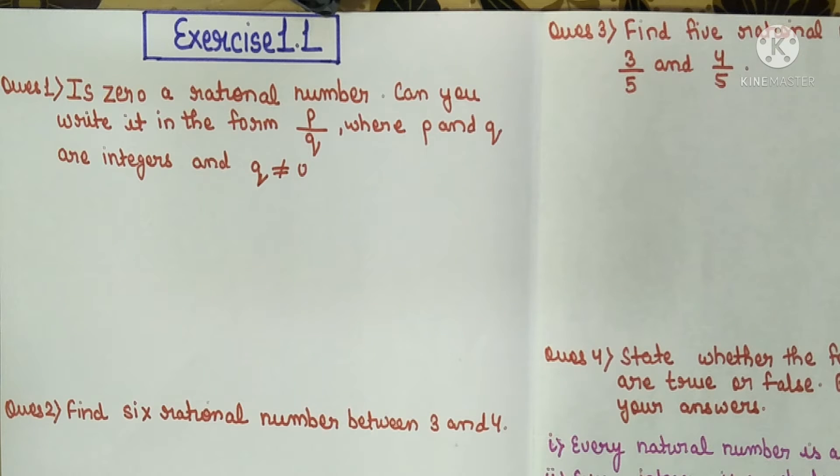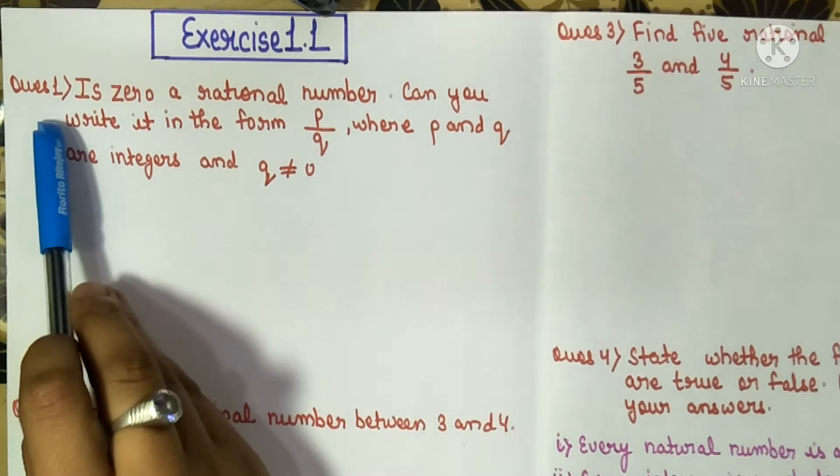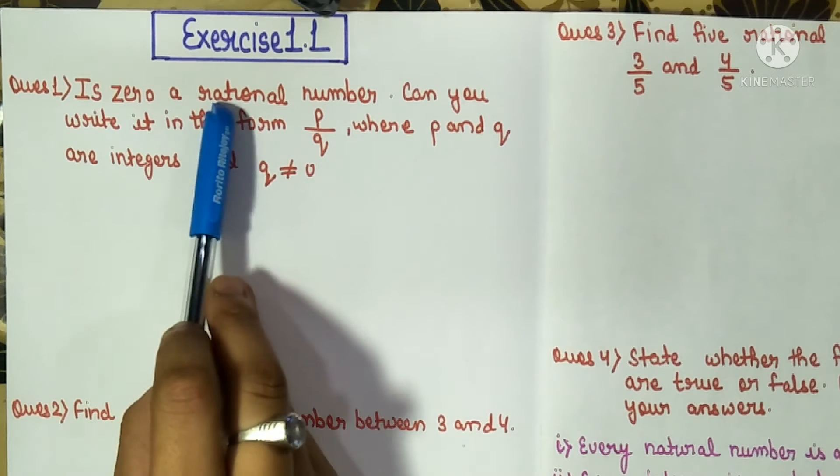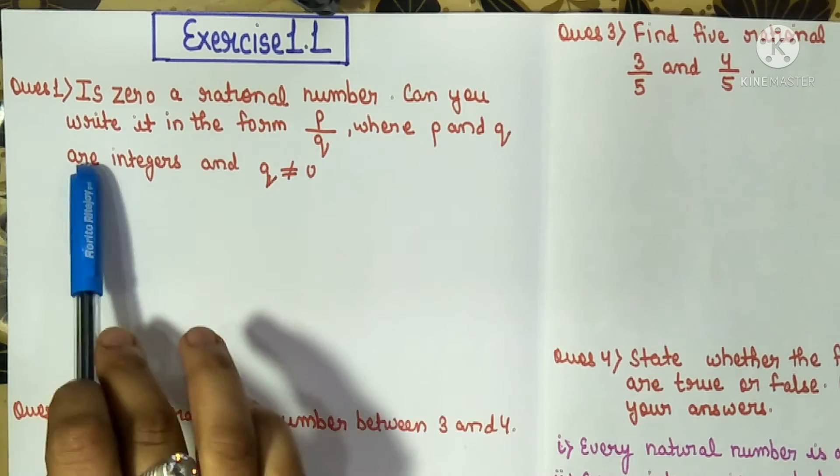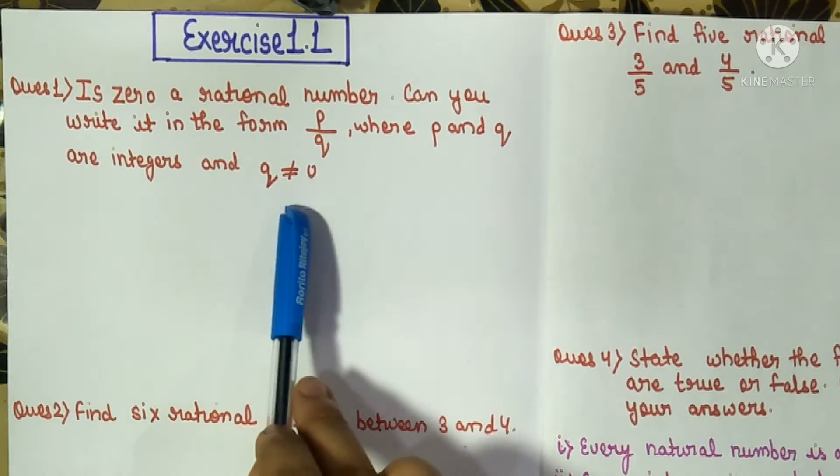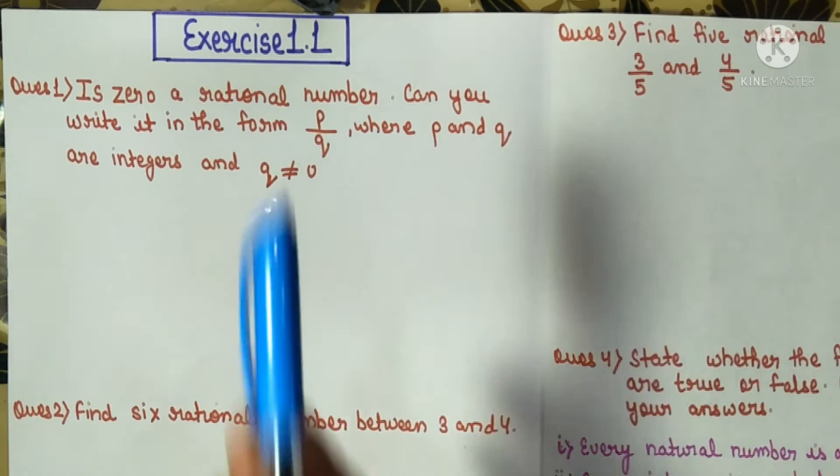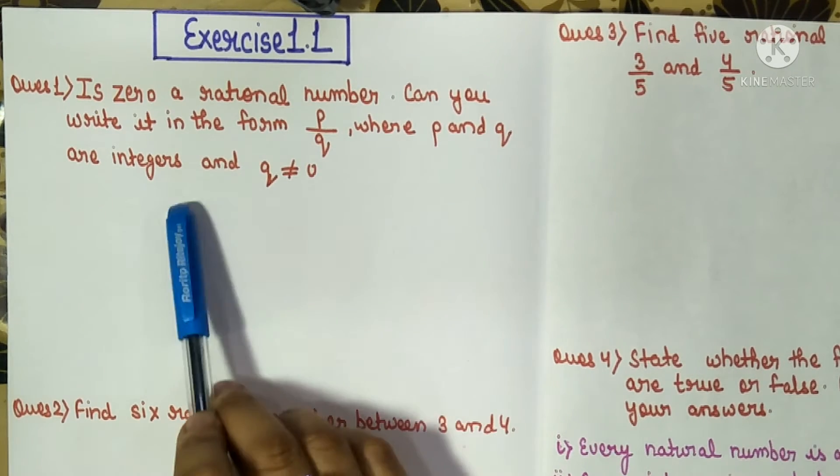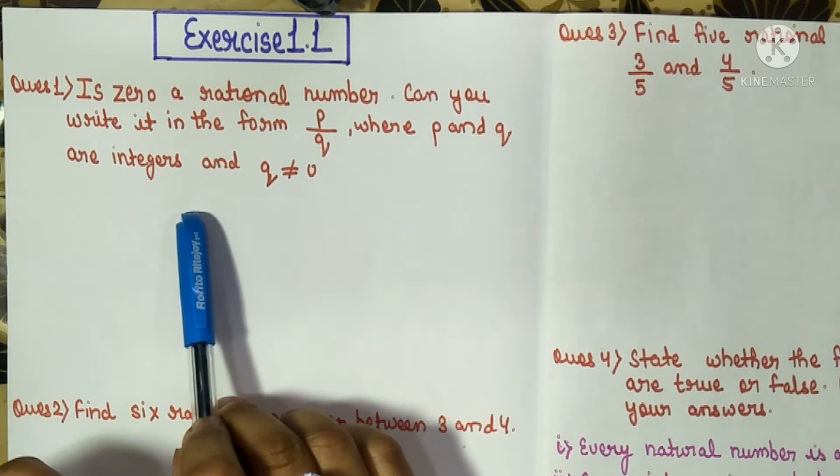So let's start. Question number one says: Is zero a rational number? Can you write it in the form of p by q where p and q are integers and q is not equal to zero? In this question we have to tell whether zero is a rational number or not.